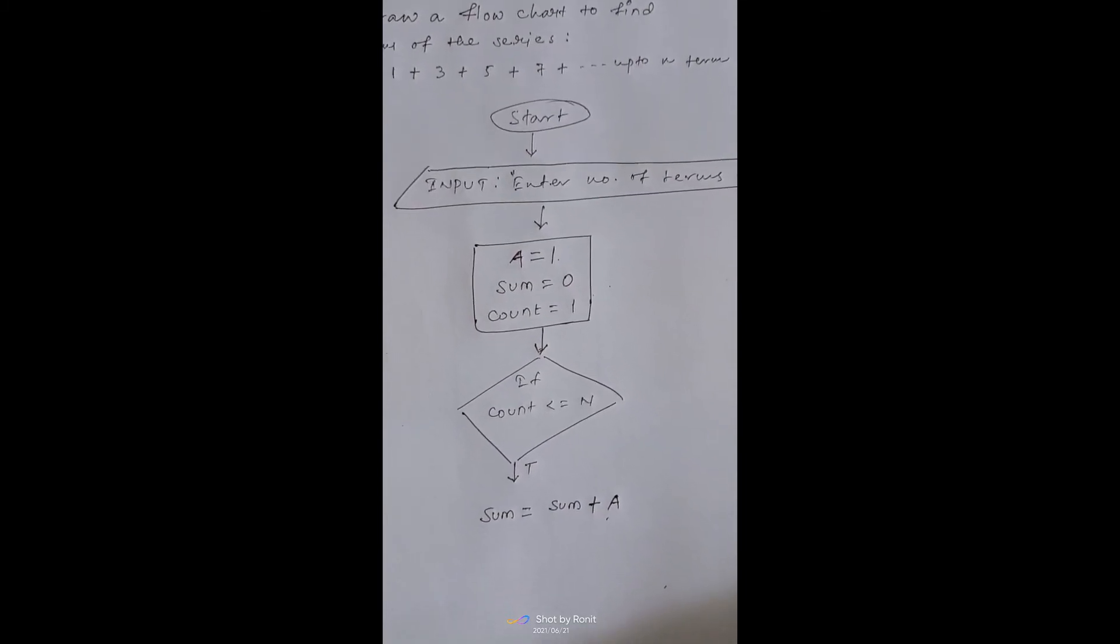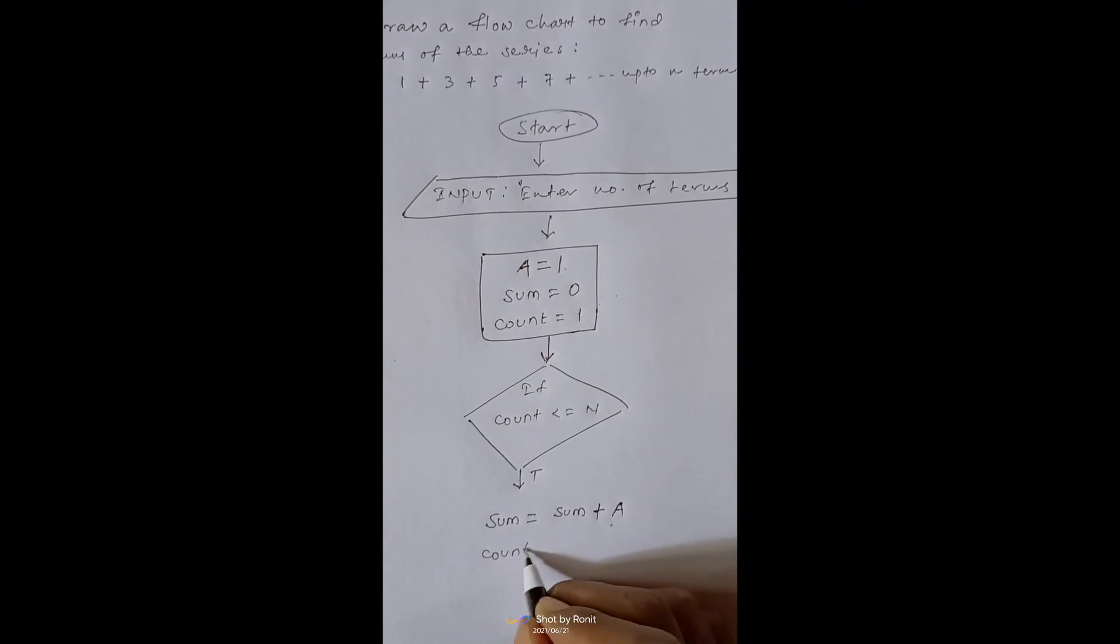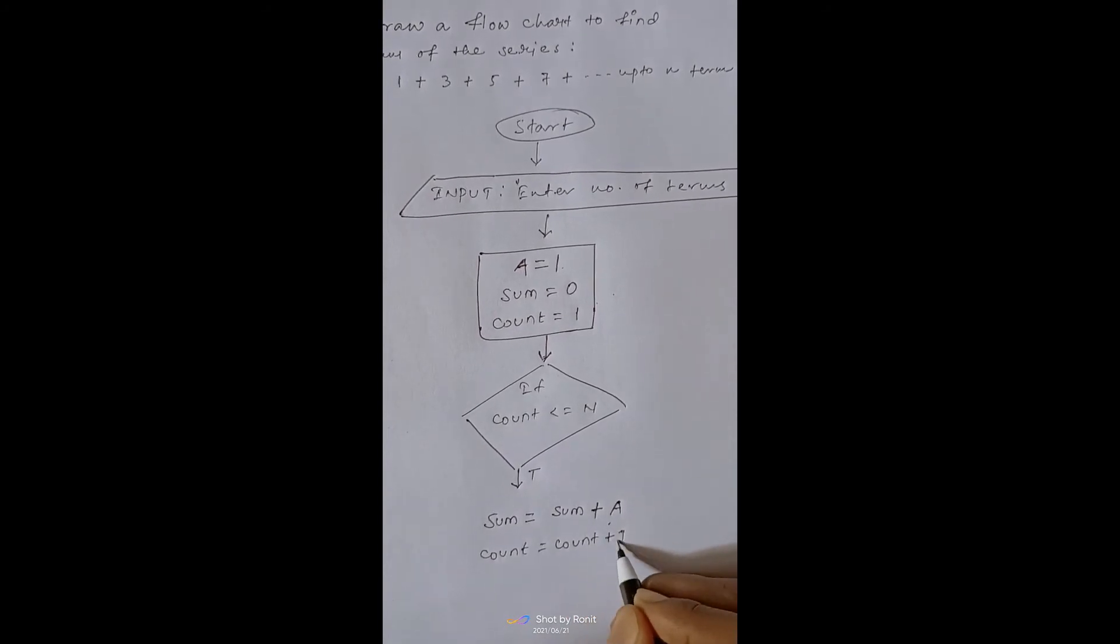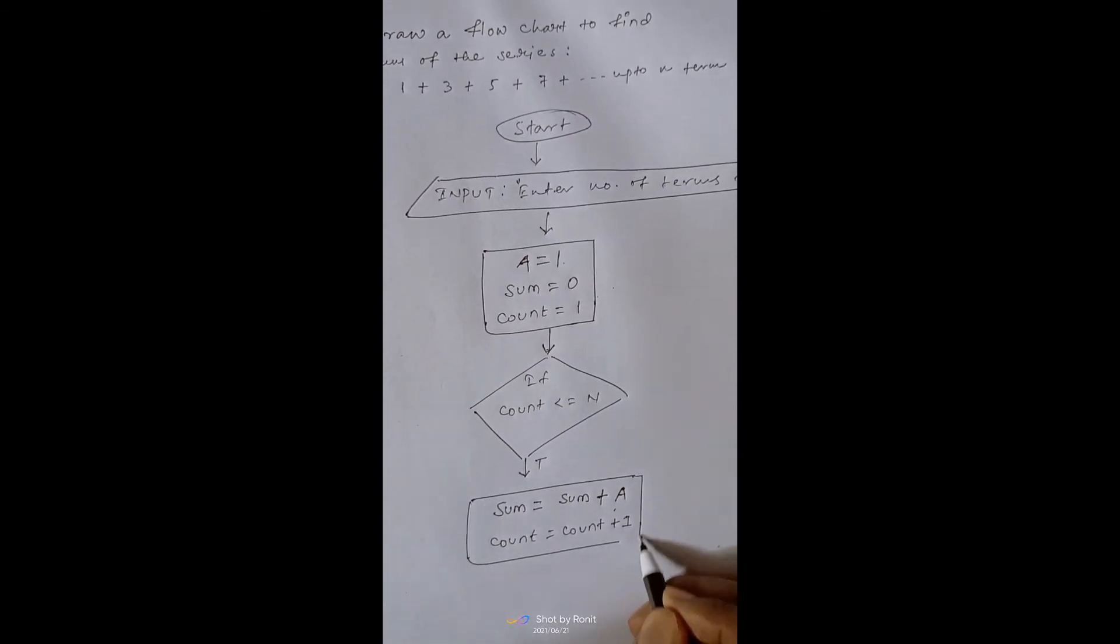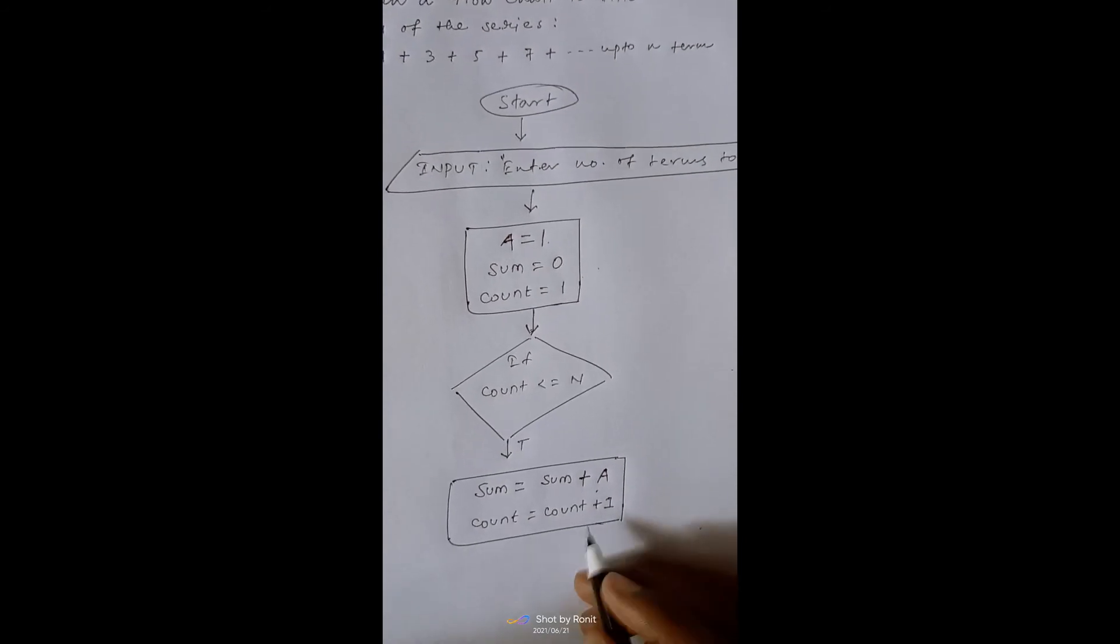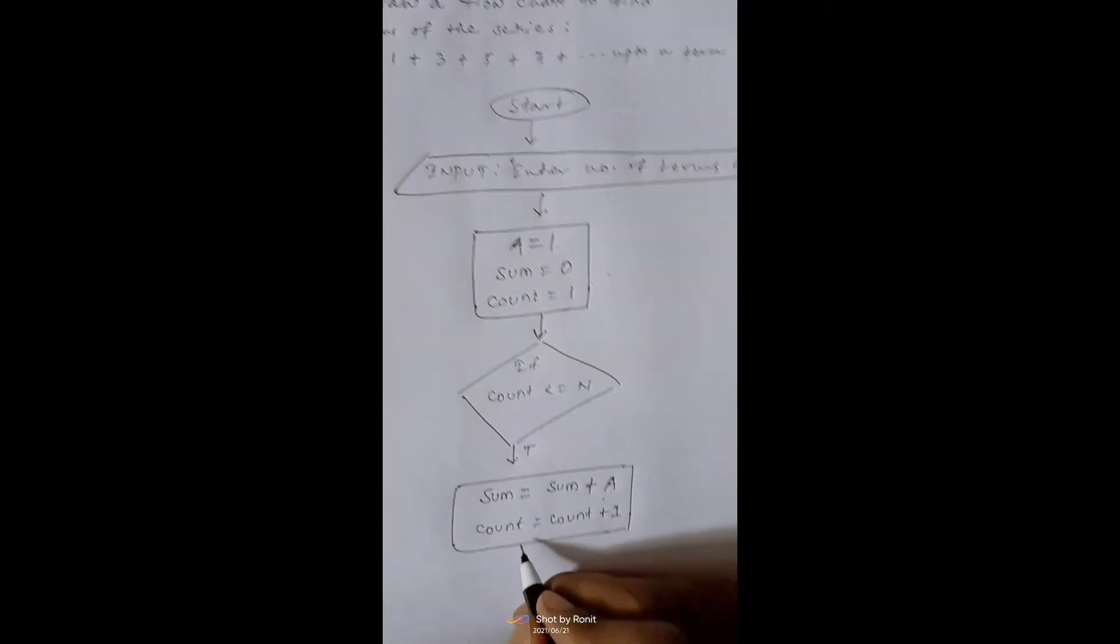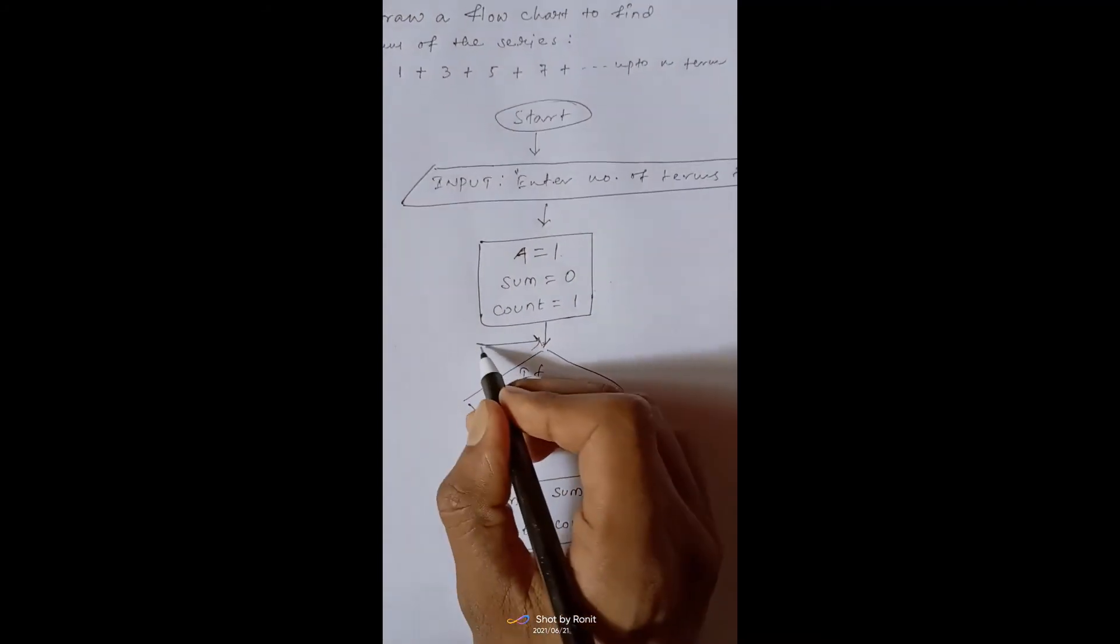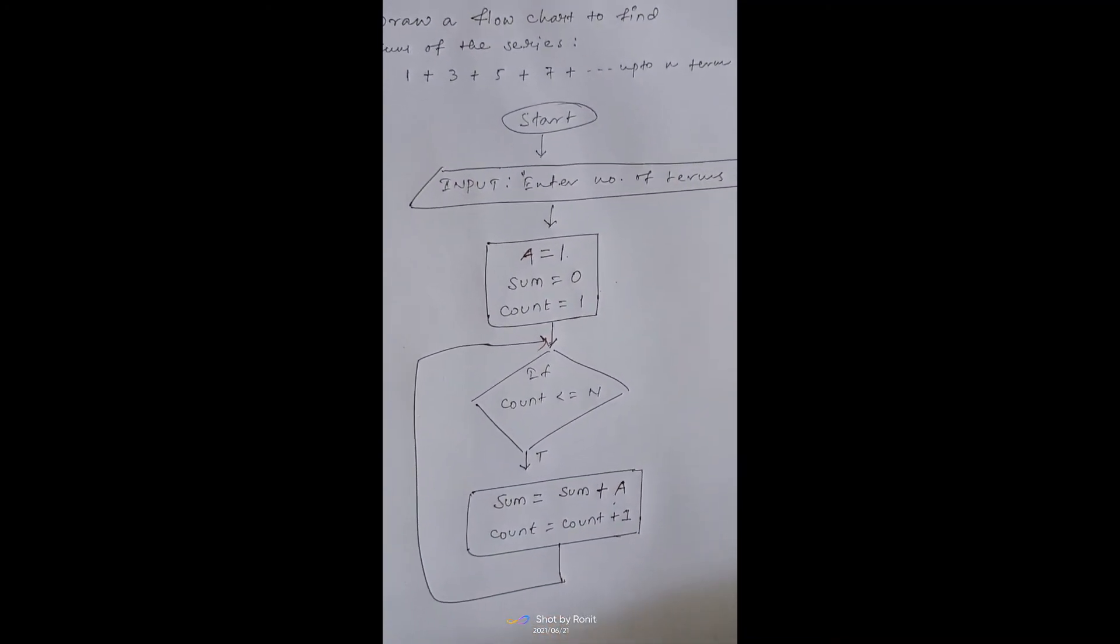Now we will move to next term. How? We will move to next term by count equals to count plus 1. It means we are moving to next term. So we will have to check whether it is less than n or not. So we will have to go here using a loop.